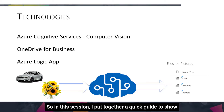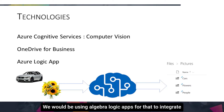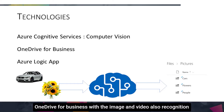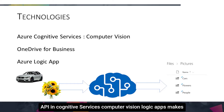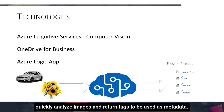In this session, I put together a quick guide to show you how to build a flow using Azure Logic Apps to integrate OneDrive for Business with the image and video recognition API in Cognitive Services — Computer Vision. Logic Apps makes it easy to integrate multiple APIs, and Cognitive Services quickly analyzes images and returns tags to be used as metadata.